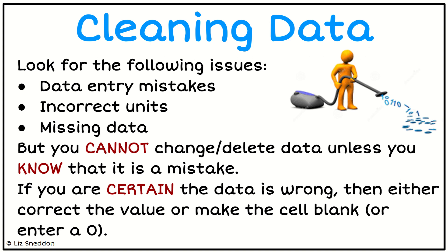The key thing to remember is that the data could be quite valid—it could be an outlier or something. Unless we know for certain that it's a mistake, we need to leave it alone. If we're certain it's wrong, then we either correct the value if we know what it should be, or we leave the cell blank or turn it into a zero depending on the situation.